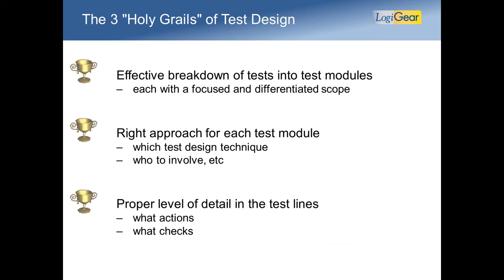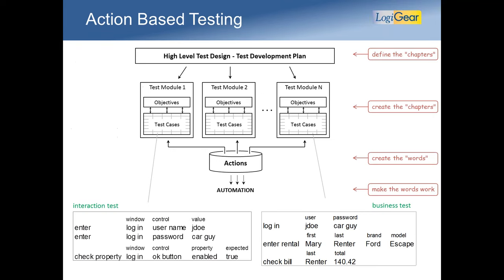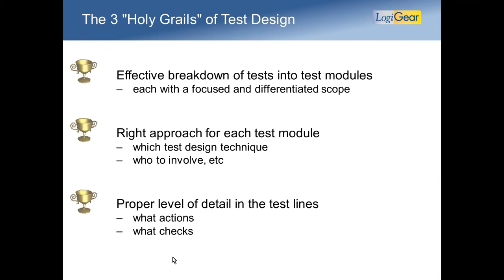To summarize, here are the three holy grails of test design. First: effective breakdown of tests into modules where each module has a very clear and differentiated scope. Second: for each module, think through your approach — which test design technique, who the stakeholders are, whether you're doing it in a sprint. Third: when developing the test, figure out what actions to use — low-level for interaction tests, high-level for business tests — and what checks to perform.